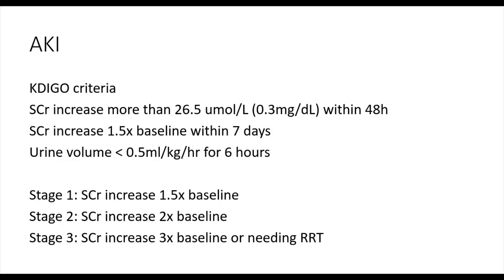Prior to the present KDIGO criteria that was first published in 2012, other criterias like the AKIN and RIFLE criteria were used. KDIGO has announced that a new 2023 updated criteria will be available later this year. But at present, we define an acute kidney injury as a serum creatinine rise of more than 0.3 milligrams per deciliter, which is converted to 26.5 micromoles per liter, within a 48-hour period. Or a serum creatinine rise of more than one and a half times the baseline within a week. Or a urine volume of less than 0.5 mls per kilo per hour for six hours, which is generally considered the lower limit for normal urine output. In practice, the AKI diagnosis is usually made by the rise in serum creatinine from serial blood tests, as it is generally impractical to measure urine output unless the patient is in a highly monitored environment.